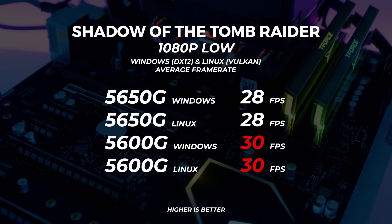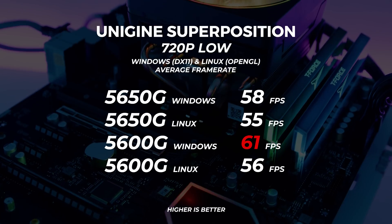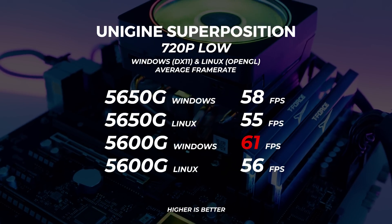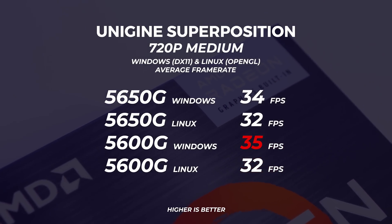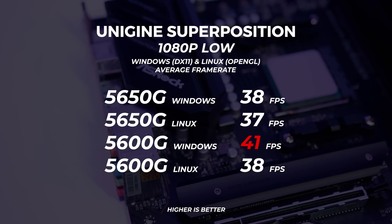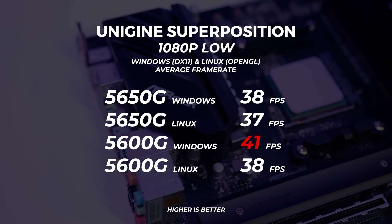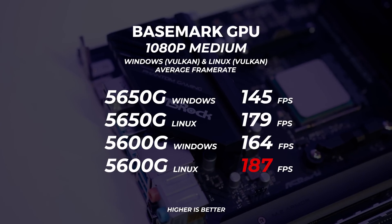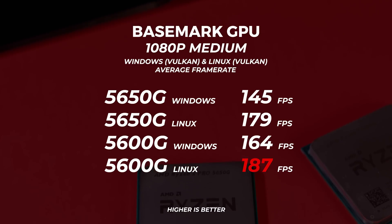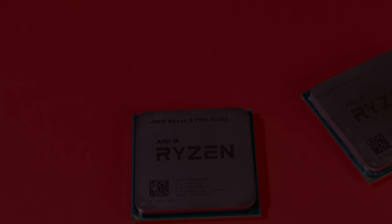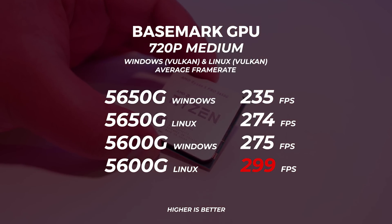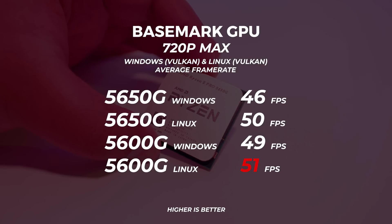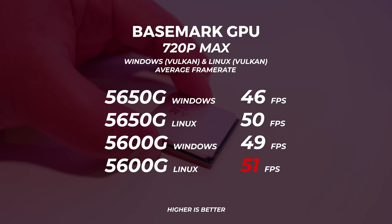Next up is Unigine Superposition. At 720p low the 5600G comes out on top in Windows with 61 FPS. At 720p medium the 5600G in Windows at 35 FPS beats out the 5650G, and at 1080p low the 5600G again comes out on top at 41 FPS. Next up is Basemark GPU — at 720p low the 5600G in Linux tops out performance, which is unusual for Basemark. At 720p medium the 5600G comes out on top at 299 FPS, and with everything maxed out at 720p the 5600G leads at 51 FPS. Don't be fooled by Basemark's high scores — they don't necessarily mean it's good.